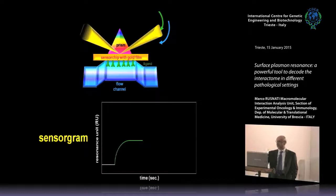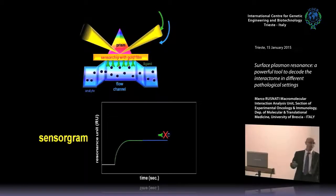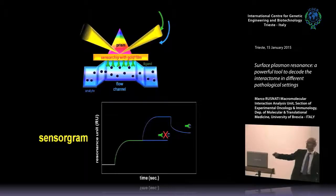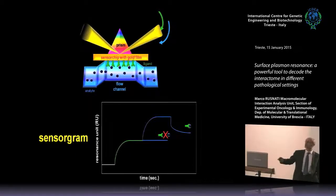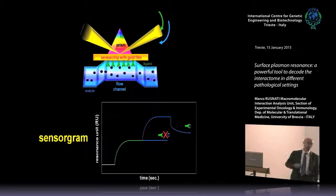What is more interesting for us is what happens when we inject the analyte. We have two different possibilities. The first: the analyte does not bind the ligand — in this case you have no modification of the newly generated baseline. While, hopefully, if the analyte does bind the ligand, you have a further increase of the RU number that, in this case, is reversible. Because in the flow channel we inject a definite volume of analyte, so that at the end of the injection we observe the spontaneous detachment of the analyte from the ligand.